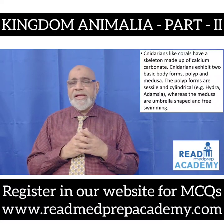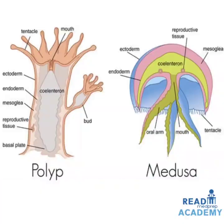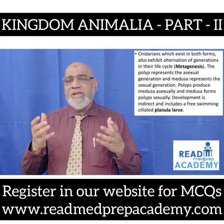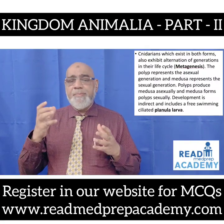Cnidarians like corals have a skeleton made up of calcium carbonate. Cnidarians exhibit two basic body forms: the polyp and the medusa. The polyp forms are sessile and cylindrical — example Hydra and Adamsia — whereas the medusa are umbrella-shaped and free-swimming. In this image on the left side you can see the polyp form with a mouth and tentacles leading into the coelenteron; it has an ectoderm, endoderm, and mesoglea between them, with a reproductive tissue and basal plate. On the right side you can see the medusa with ectoderm, endoderm, mesoglea, reproductive tissues, mouth, oral arms, and tentacles.